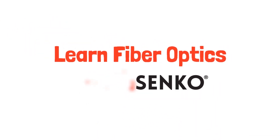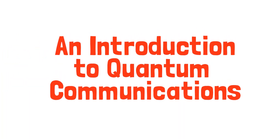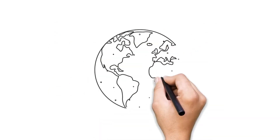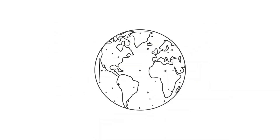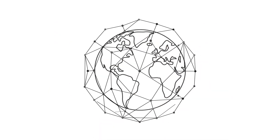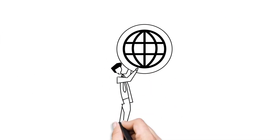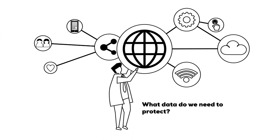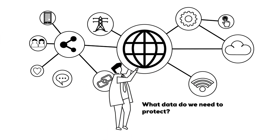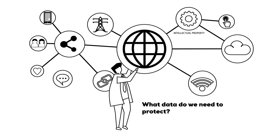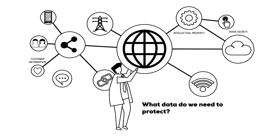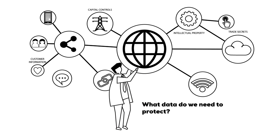Learn Fiber Optics with SENCO. The world turns on information — it's by far the most important and valuable global resource in the modern world. An organization's survival depends on its ability to protect critical data, including intellectual property, customer information, trade secrets and capital controls.